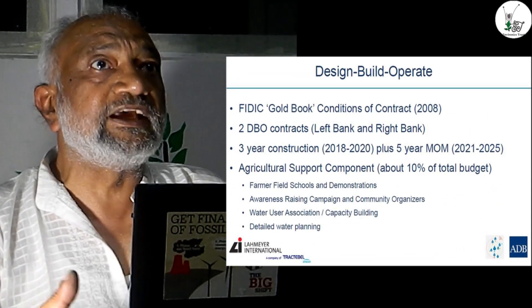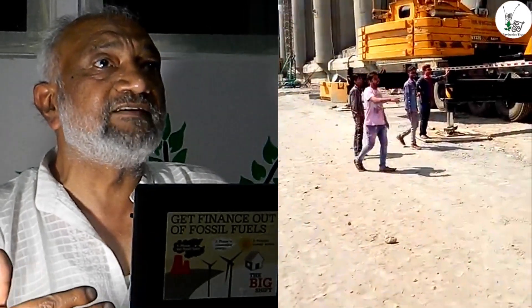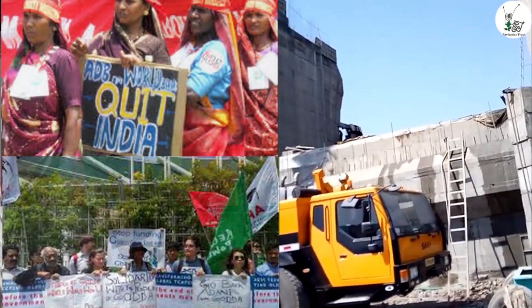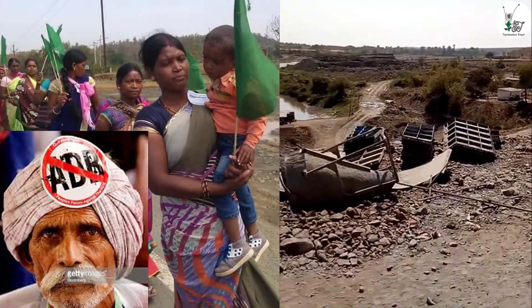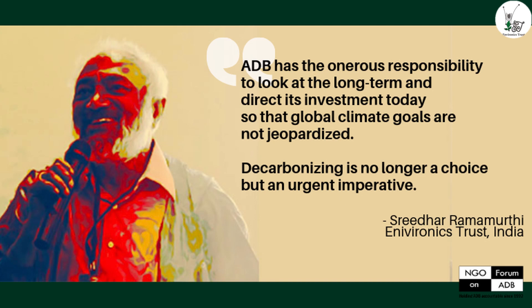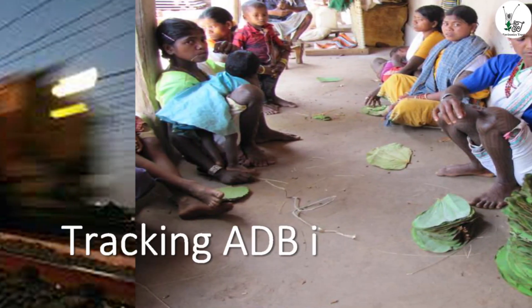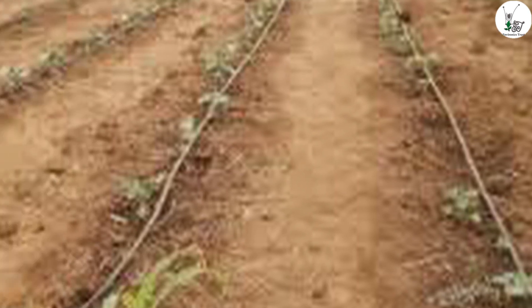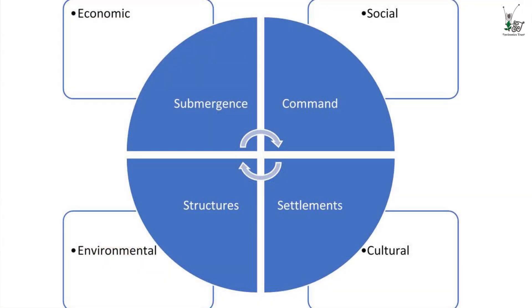We will be tracking this project — looking at what is happening to people in the submergence zone, in the command area, and what implications these structures have, as well as the issues that communities are raising. There have already been protests in many of these areas, and some court cases where people who had land there have been displaced after being compensated for a project that never came up. We hope that institutions like ADB and other multilateral development banks start looking at due diligence more seriously and not as a tick-box mechanism.